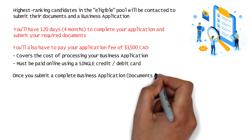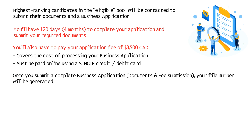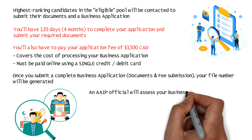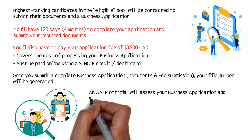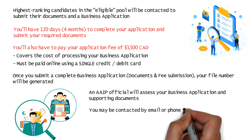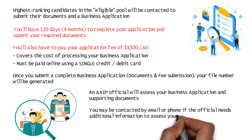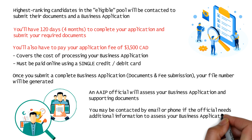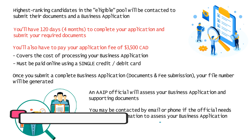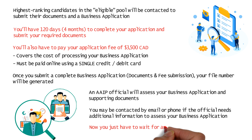Once you submit a complete business application, the AAIP portal will automatically generate a file number. Once the business application and supporting documents are received, the AAIP will assess your application. An AAIP officer may contact you by email or phone if additional documents or information are needed. Then you'll just have to wait for an email from the AAIP.